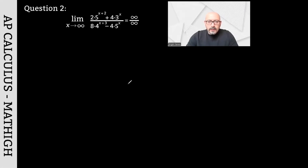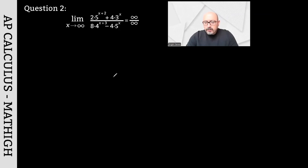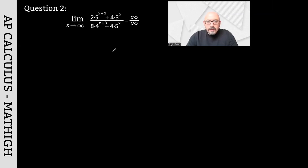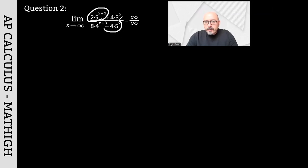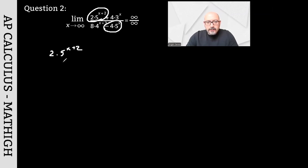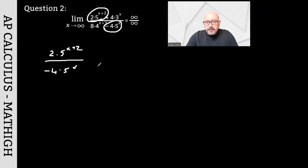The second question: as x approaches infinity, a question involving exponential functions has been given, creating an indeterminate form of infinity over infinity. Here as well, it's enough to focus on the dominant terms. So it's 2 times 5 to the power of x plus 2 on top, and minus 4 times 5 to the power of x on the bottom — I'm not forgetting to take the negative in front. So it's enough to focus on 2 times 5 to the power of (x+2) over minus 4 times 5 to the power of x.